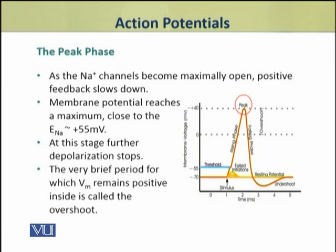The sodium channels become maximally open. At this stage, the membrane potential reaches a maximum close to the sodium equilibrium potential of positive 55 millivolts. Further depolarization stops, and this is known as the peak. This brief period in which the membrane potential remains in the positive range is called the overshoot.